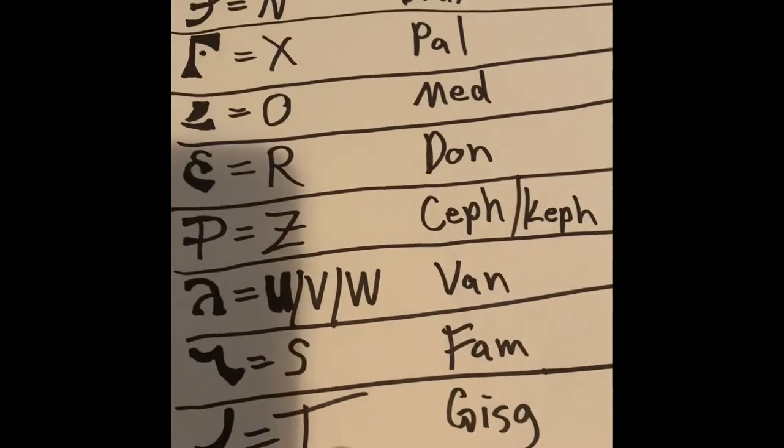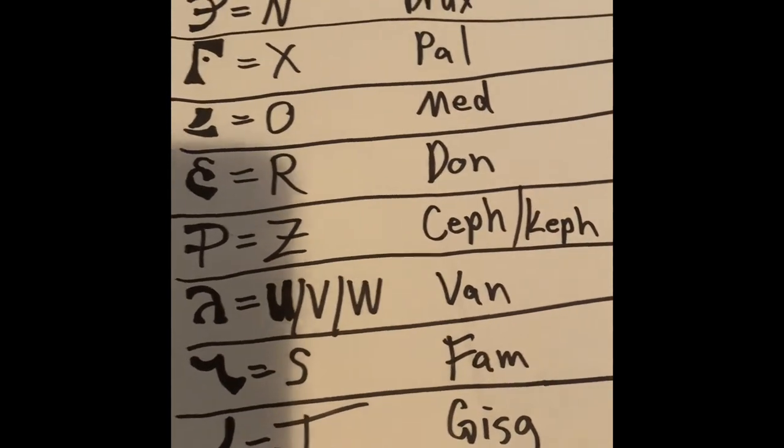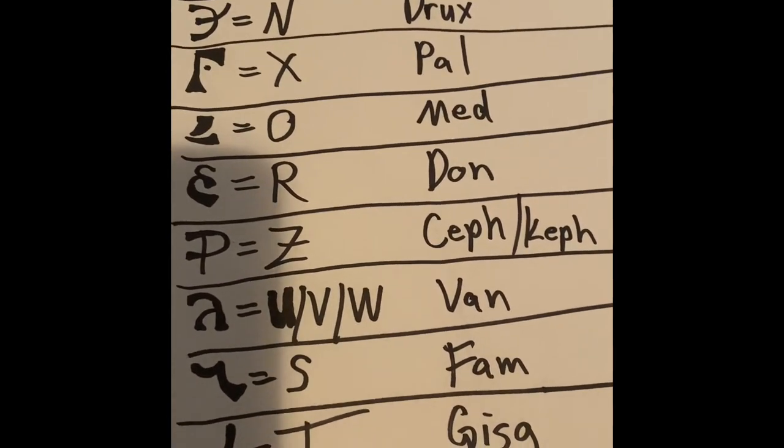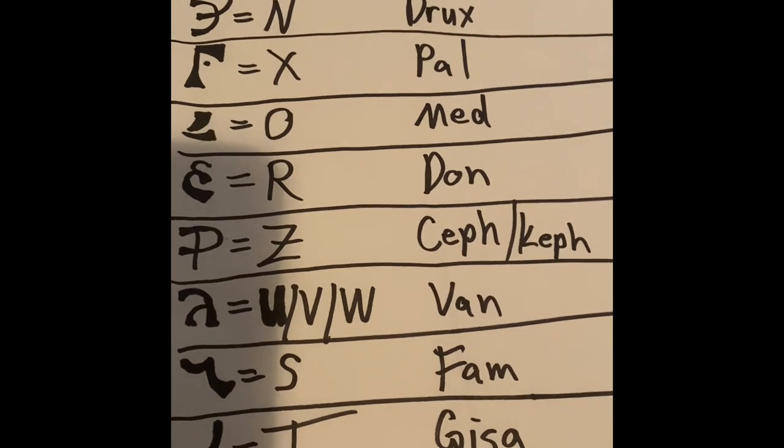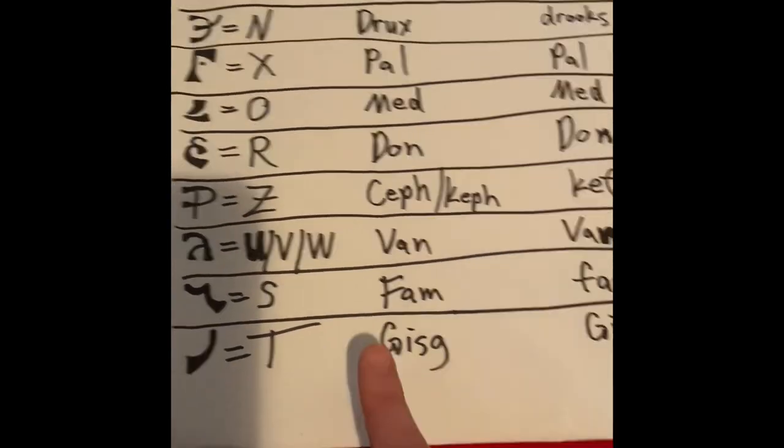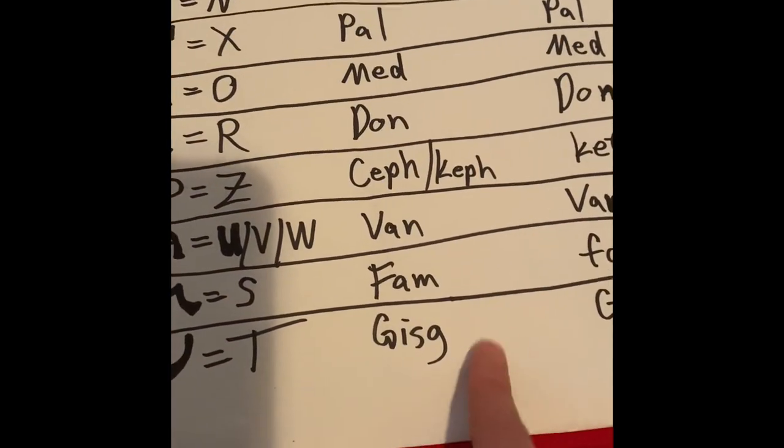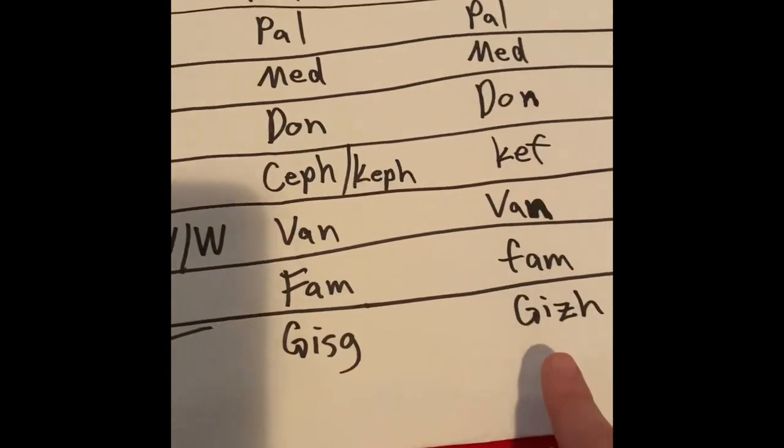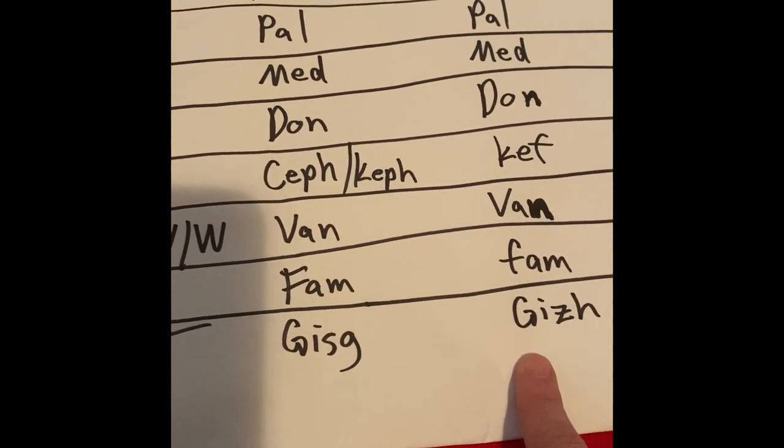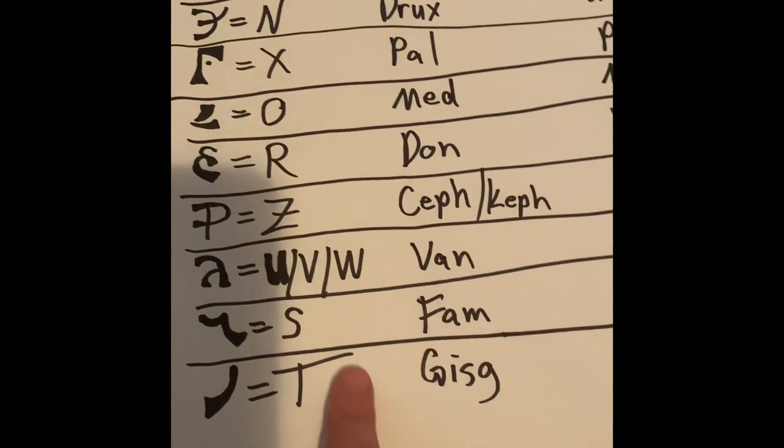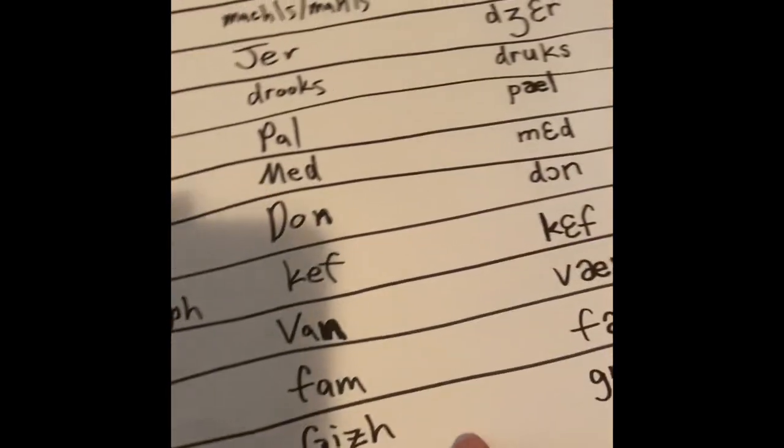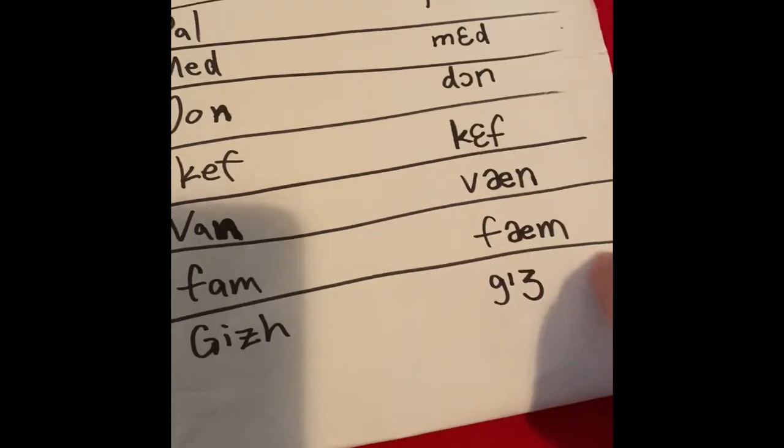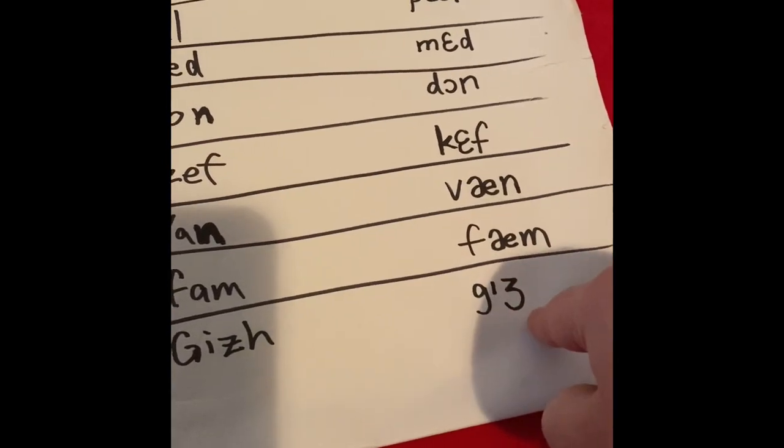And then finally, we get to the letter T in English. And the Enochian equivalent of that is Gij. So it's spelled G-I-S-G. If you transliterate Enochian letters to English letters, but it's pronounced Gij. So letter T, Gij. This is Leach's pronunciation. And this would be the IPA spelling.